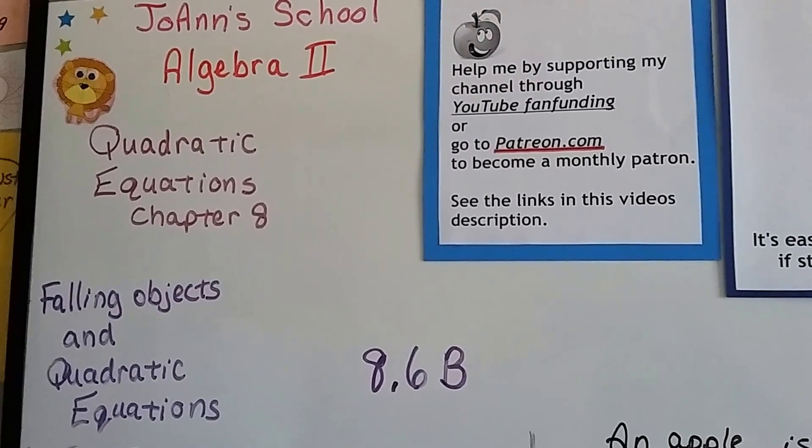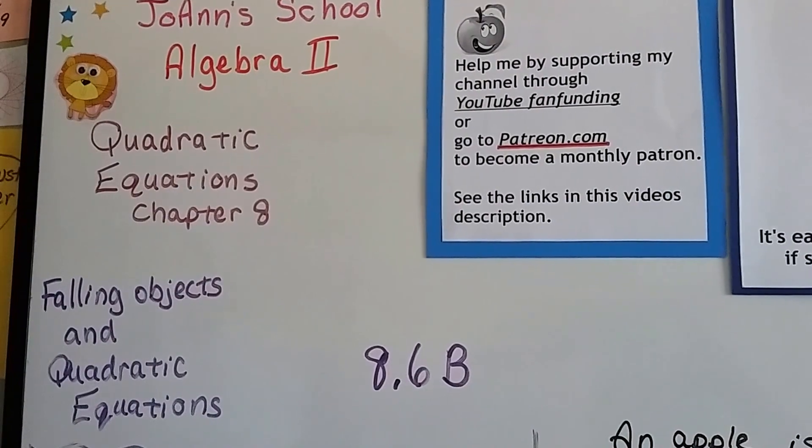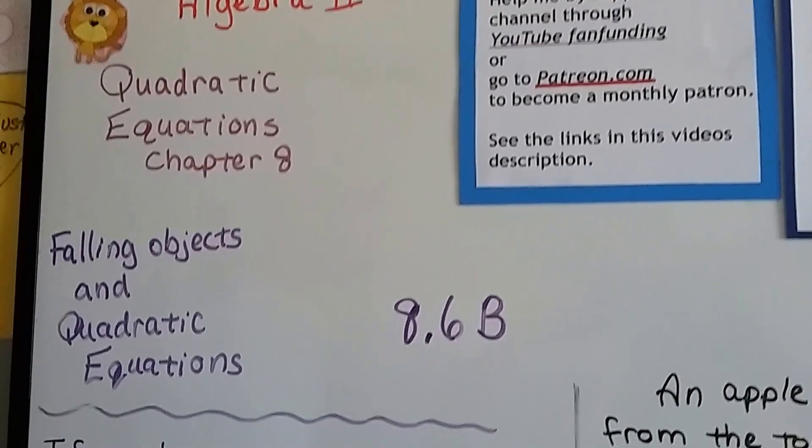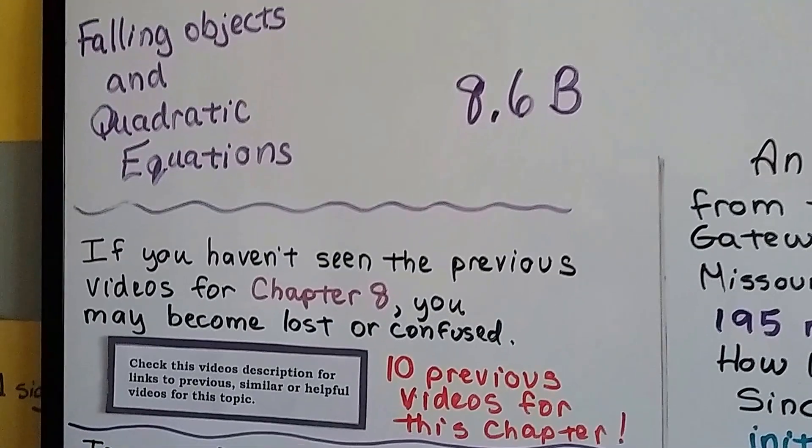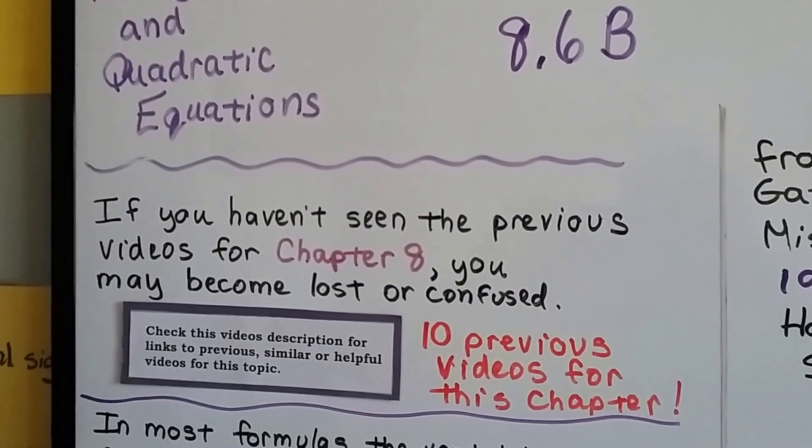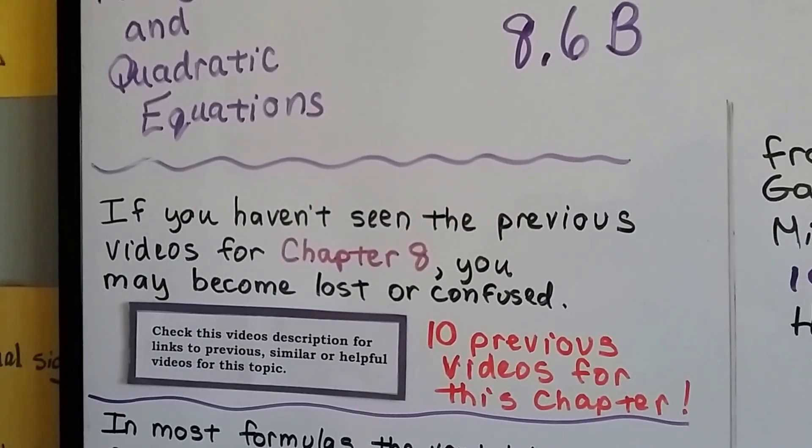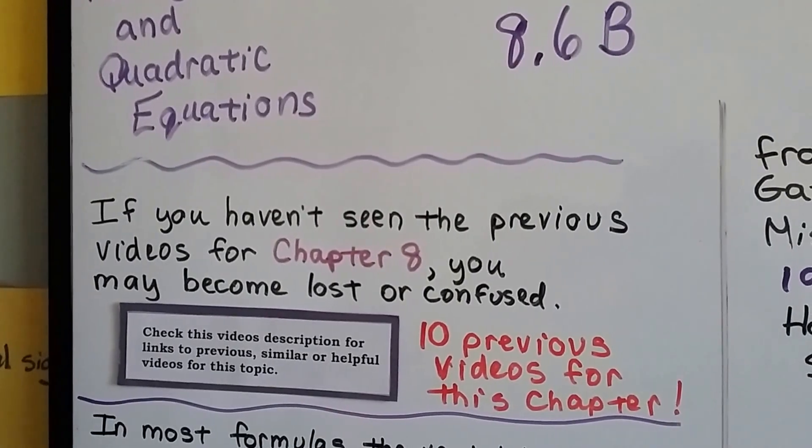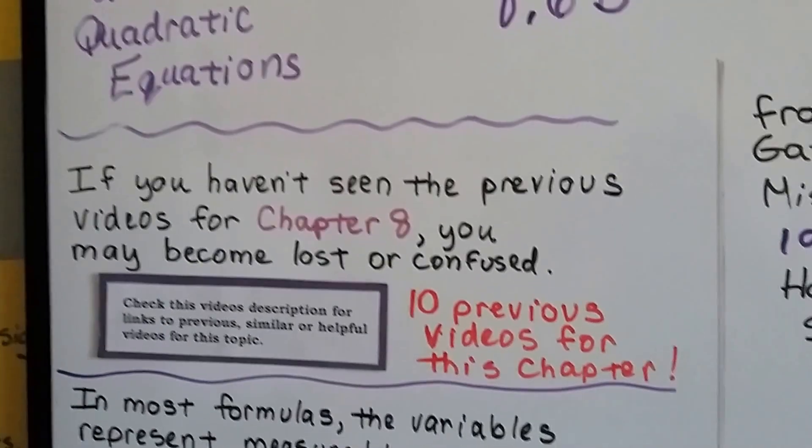Algebra 2, 8.6b, we're going to talk about falling objects and quadratic equations. If you haven't seen the previous videos for chapter 8, there's links in this description, so if you become lost or confused during the video, you can click on the description, find out what you missed, and catch up.